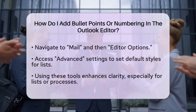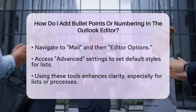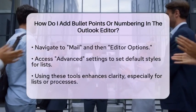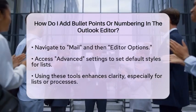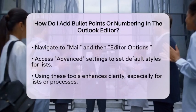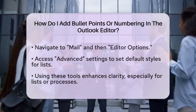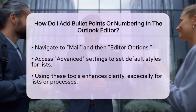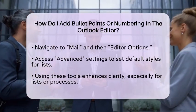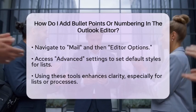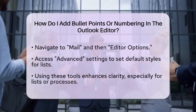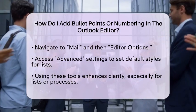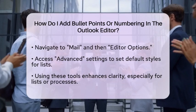Using bullet points and numbering can greatly improve the clarity of your emails. This is especially useful when you are listing items or outlining steps in a process. Clear and concise information is key in business communications, and these formatting tools can help you achieve that.